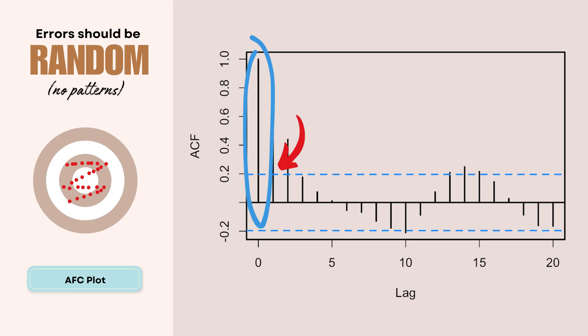However, this first bar actually is always exactly one. At lag zero, we're comparing each error with itself. And when you compare anything with itself, you get perfect correlation. It's like asking if you're identical to yourself, and the answer is always yes. That's why we can basically ignore this first bar when interpreting the plot.